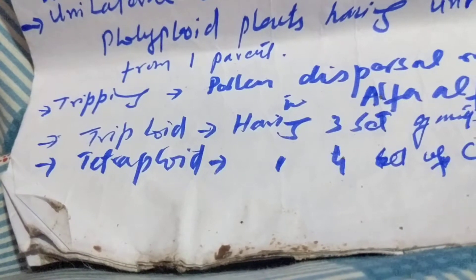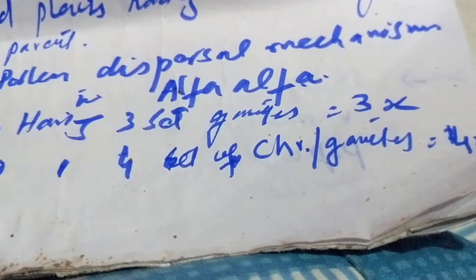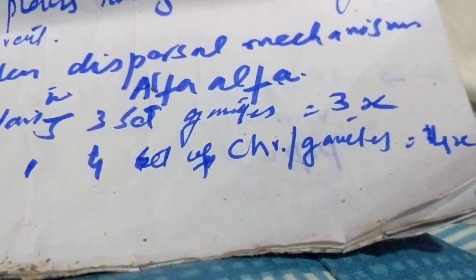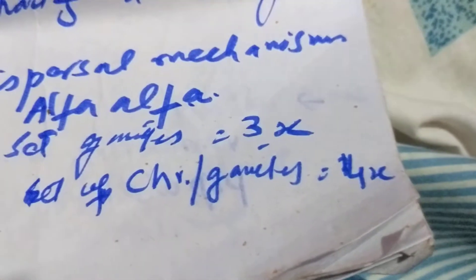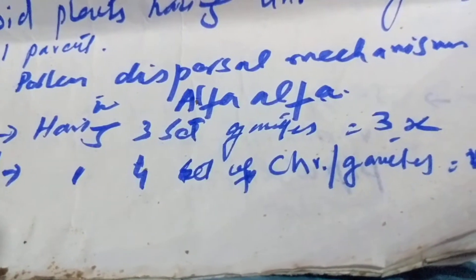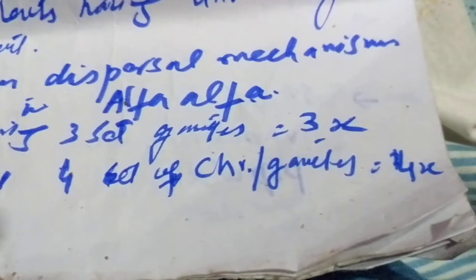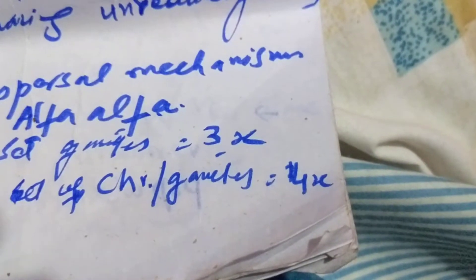Triploid are having three sets of chromosomes or gametes equal to 3x, whereas tetraploid having four sets of chromosomes or gametes equal to 4x.